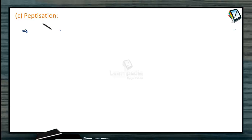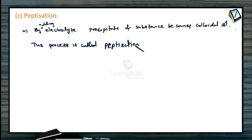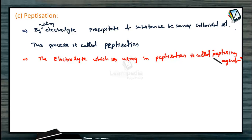Now, peptization. Peptization is a method for the preparation of colloids. By adding some electrolyte to a corresponding precipitate, it becomes a colloidal form. In this process, adding an electrolyte causes the precipitate of a substance to become a colloidal sol. This process is called peptization. The precipitate, which is in suspension form, is converted by adding electrolytes into a corresponding colloidal solution. The electrolyte used in this process is called the peptizing agent.